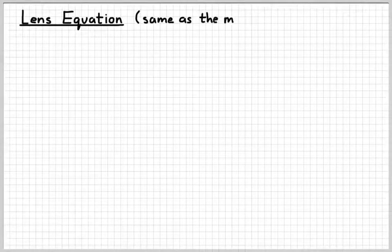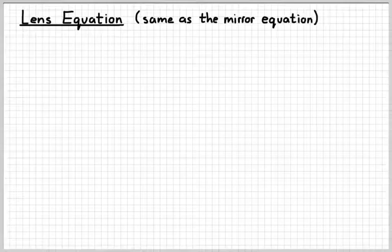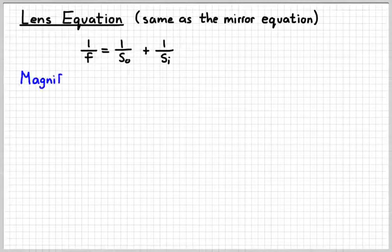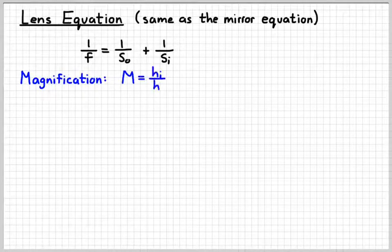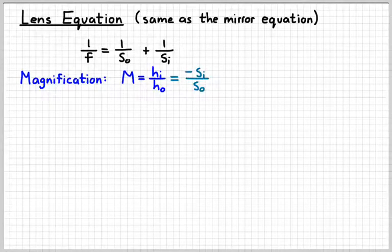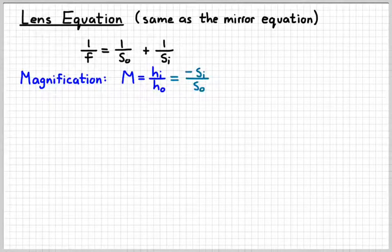Obviously we need an equation to relate the image distance, focal length, and object distance with each other. A little pro tip for you. It's the same as the equation we have for mirrors. As in one over F equals one over SI plus one over SO. The magnification equation is still the same. So HI over HO would tell us the magnification. And that's equal to negative SI over SO.